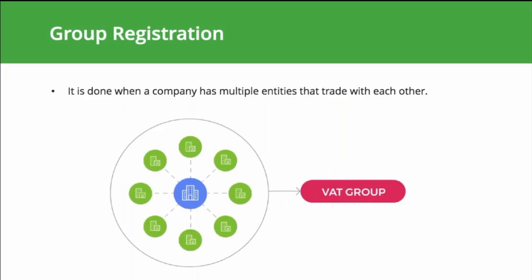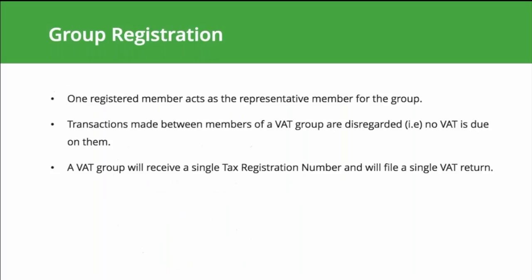VAT group registration. If a company has multiple entities that trade with each other, it is possible to register as a VAT group. When registering as a VAT group, all the entities within the group are treated as one single entity for VAT purposes. A tax group will select one of its registered members to act as a representative member, and that member will make the request to register the tax group.